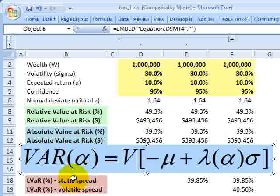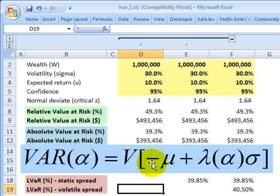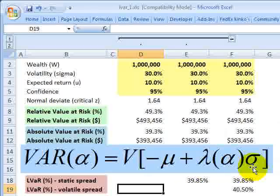So here's the formula for that. And notice the only difference here is we are incorporating the expected return, negative mu, plus the same thing we had before, normal deviate times the sigma or volatility scaled. It's negative because it's an offset.